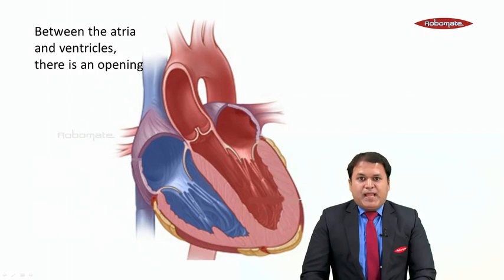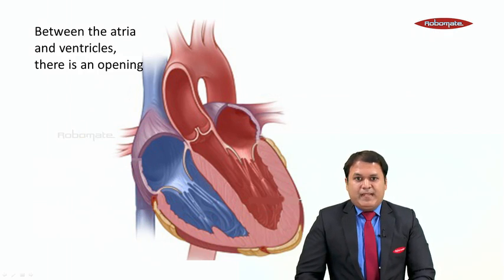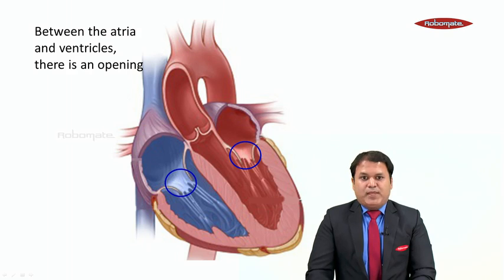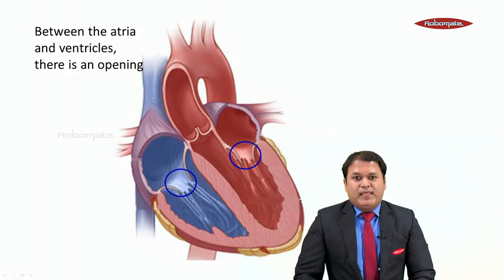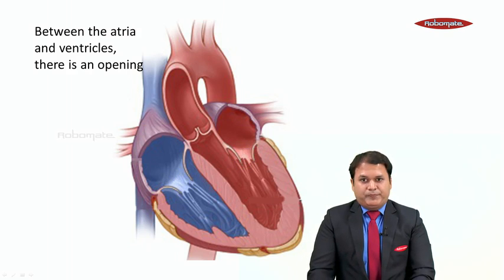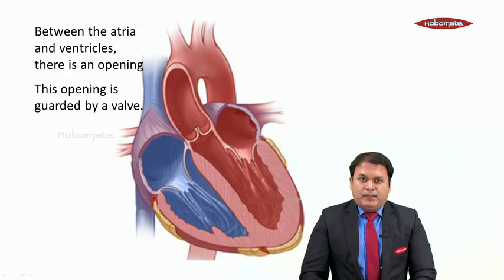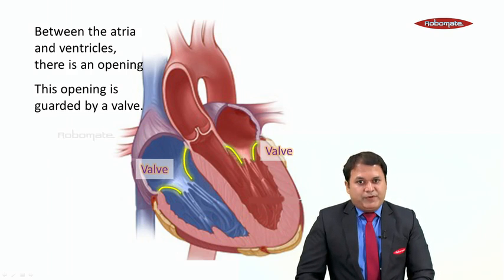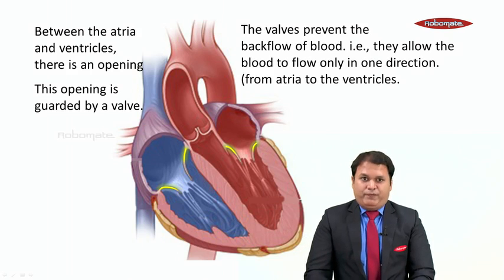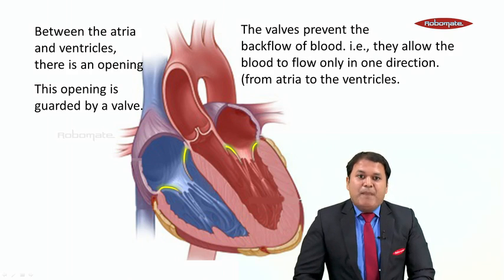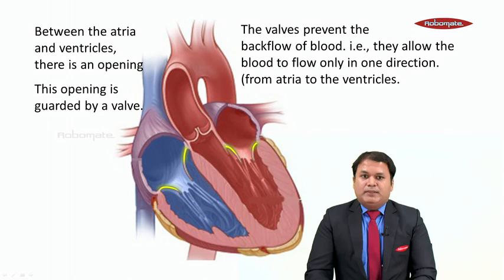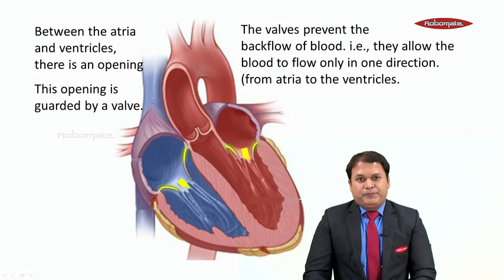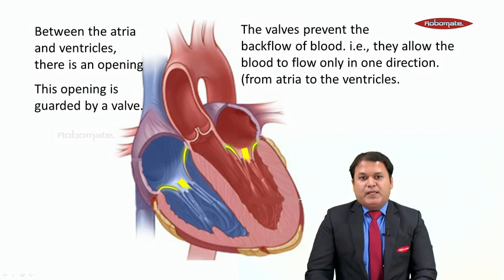Now students, between the atria and ventricles of both the right and left hand side, there is an opening. As you can see in the diagram, there is an opening between the atria and the ventricles. And this opening is guarded by a structure which is called as a valve. You can see in the diagram, a valve present between the atria and the ventricles. Now what is the function of this valve? These valves prevent the back flow of blood, which means they allow the blood to flow only in one direction, that is from the atria to the ventricles. Thus the blood cannot flow back from the ventricles to the atria.